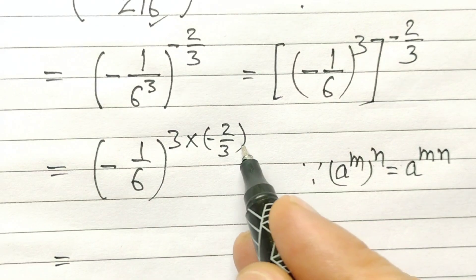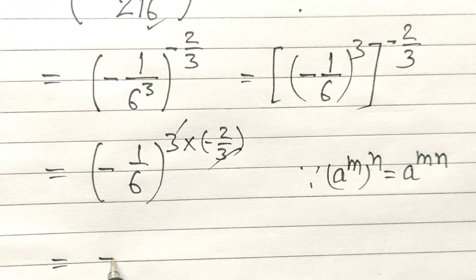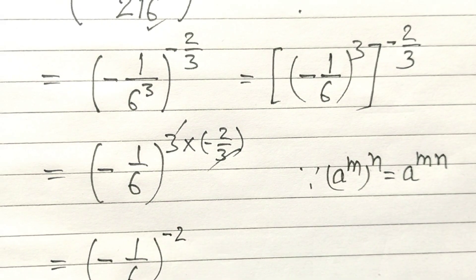Now, the 3 and the 2/3 will cancel out, so we have (-1/6)^(-2).